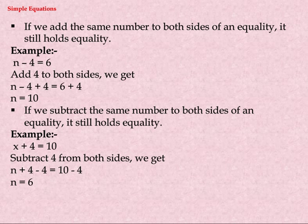If we add the same number to both sides of an equation, it still holds equality. Example: n minus four equals six. Add four to both sides — n minus four plus four equals six plus four — giving n equals ten.